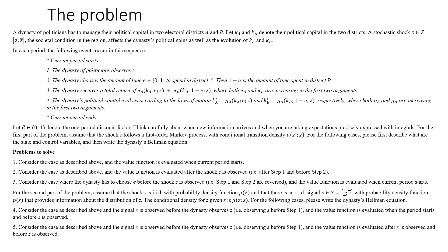We have five different cases. I will try to show you how the timing of the Bellman equation affects and changes the structure of the Bellman equation. Sometimes, especially in case one, the Bellman equation is written at a time when the basic information is unknown, even though that piece of information is going to be known when the decision maker makes its allocation decision.